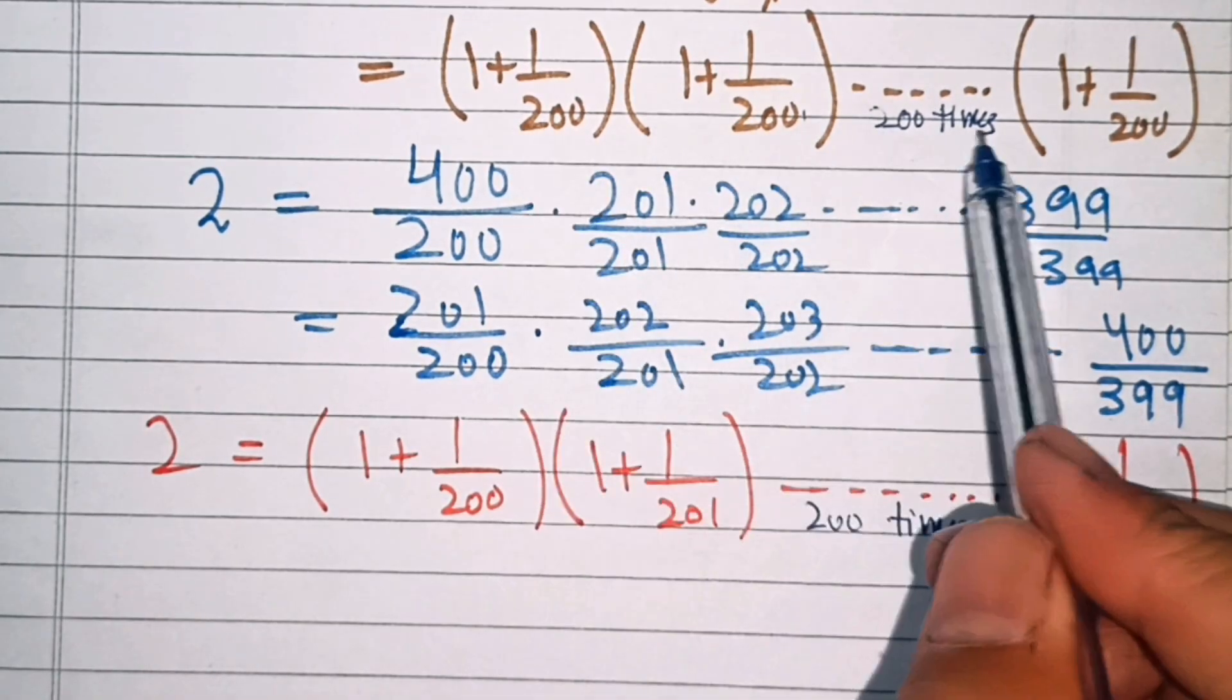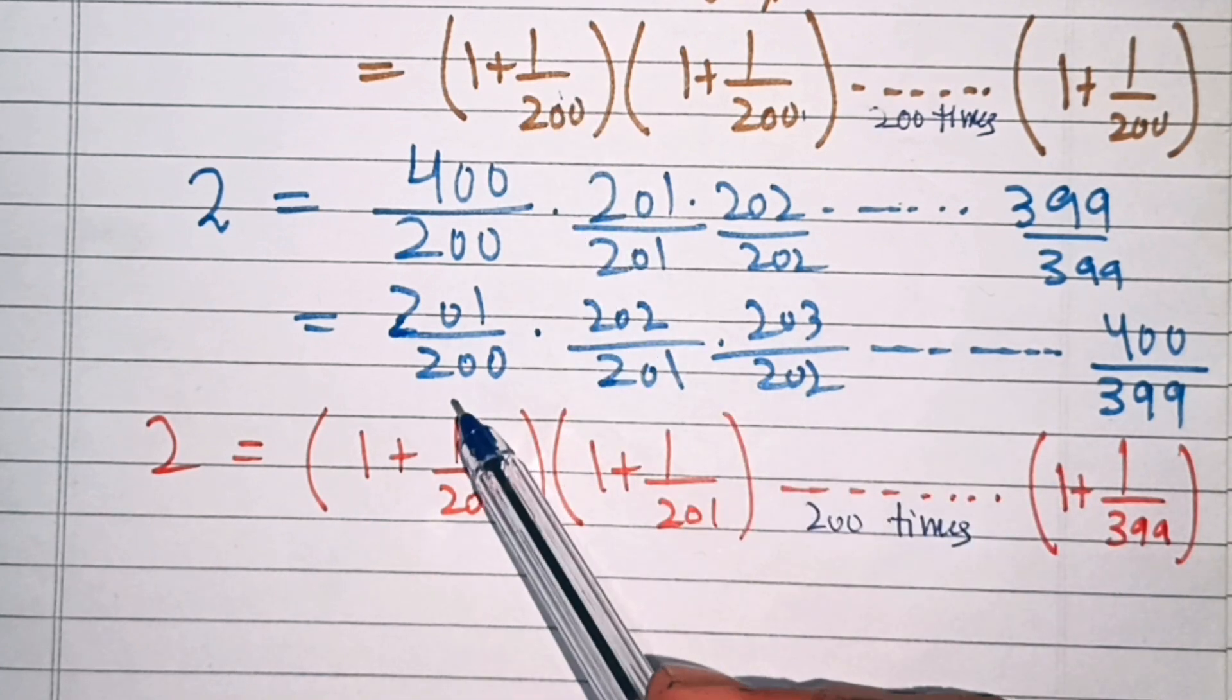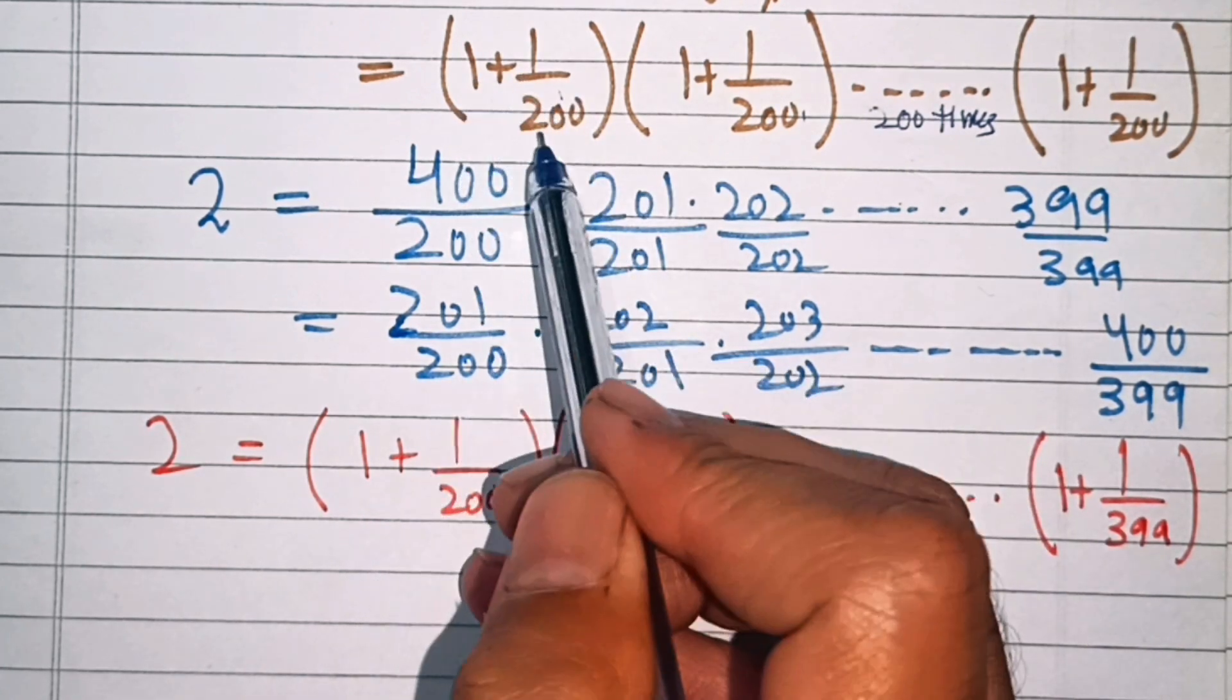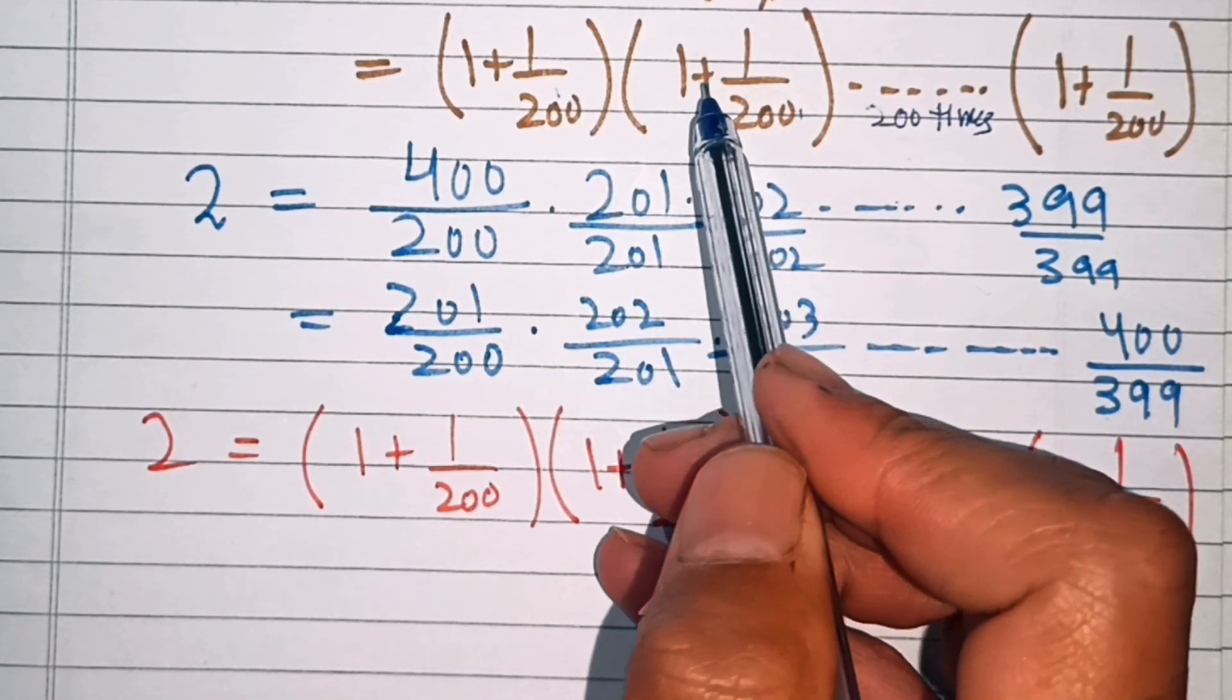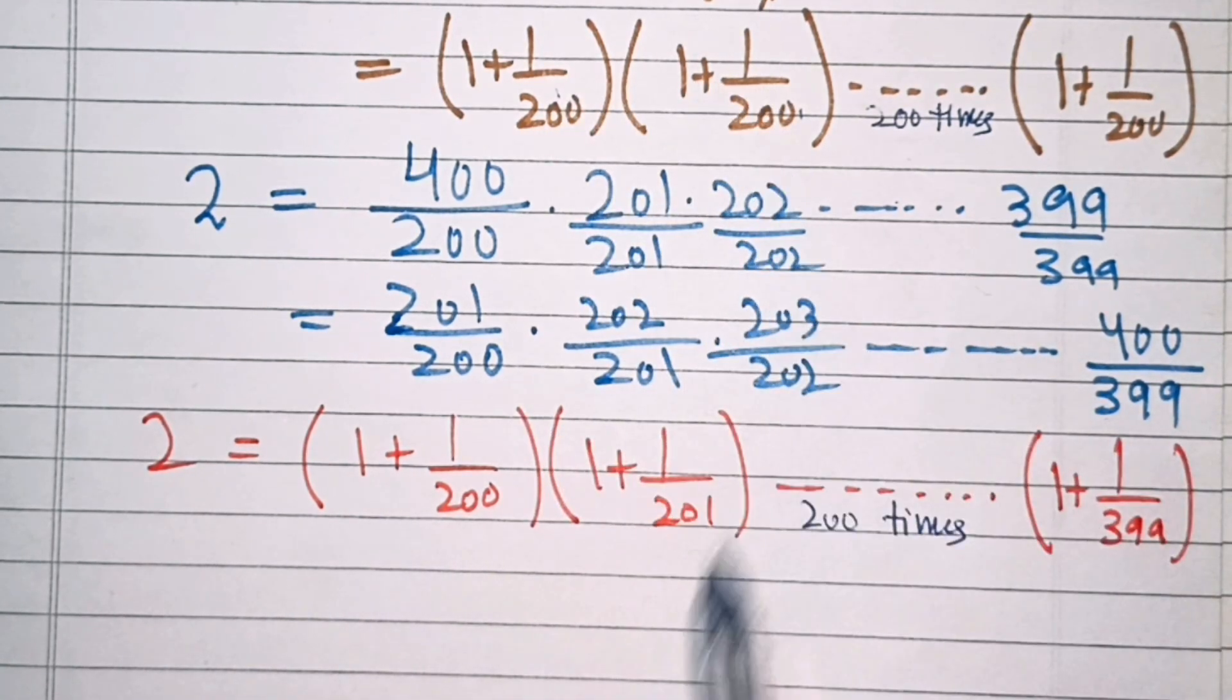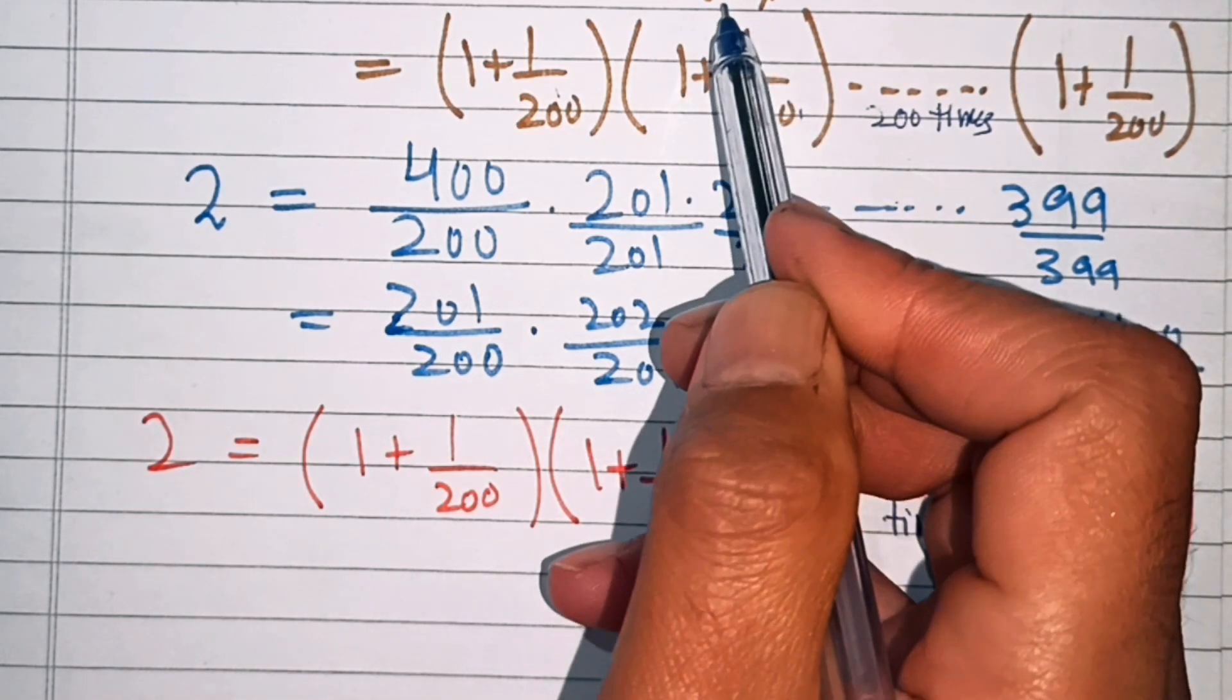Now compare this expression and this expression. These are almost in the same form. First number is 1 plus 1 over 200, and here this is same. In the second term here, this is 1 plus 1 over 200, and here this is 1 plus 1 over 201. So that means in this number, the denominators are greater than this number.